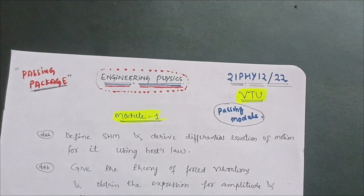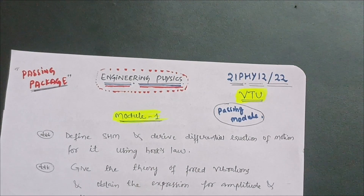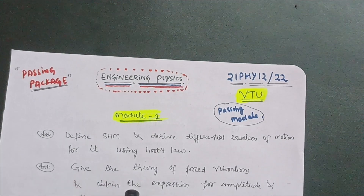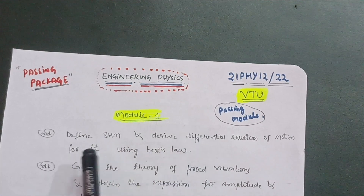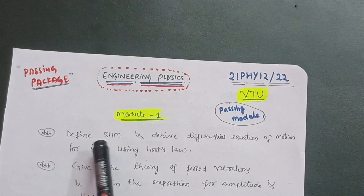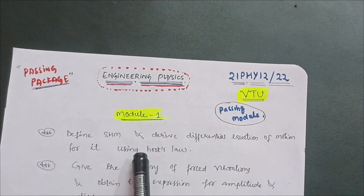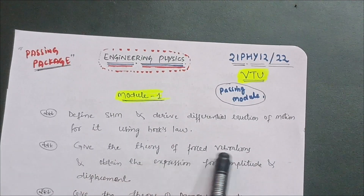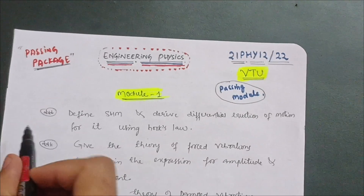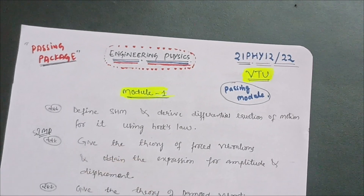This subject consists of a lot of numericals, but I hope it is easy to pass with theory only, so I have selected some theory questions you must cover. Starting with Module 1: the first and most important question is define Simple Harmonic Motion (SHM) and derive the differential equation of motion using Hooke's Law. Next, give the theory of forced vibrations and obtain the expression for amplitude and displacement — this is a super important question always asked in the VTU examination.